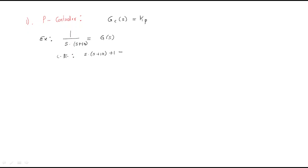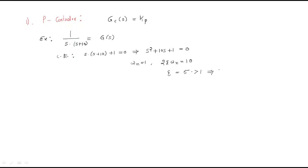Comparing with the standard second-order characteristic equation, we get ωn² = 1, so ωn = 1. From 2ζωn = 10, substituting ωn = 1, we get ζ = 5. Since ζ = 5 is greater than 1, the system is an over-damped system.